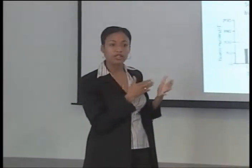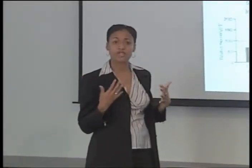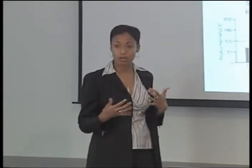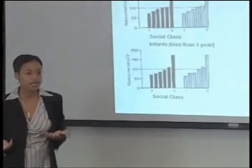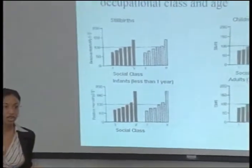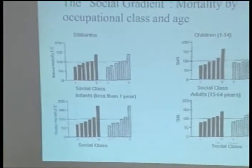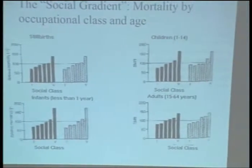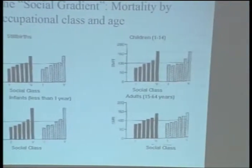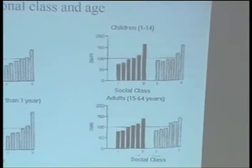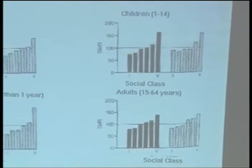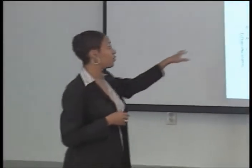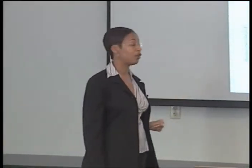Intuitively we would think that those at the bottom are challenged in securing things that bring better health — knowledge, money, power, prestige, et cetera. But it's not intuitive to think that those almost at the top are experiencing material deprivation. Yet these data show that despite that, they still have higher mortality rates than those at the very highest occupational grade. This is the social gradient in health — what we talk about in social epidemiology — the fact that this gradient persists across the entire socioeconomic scale.